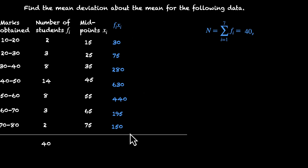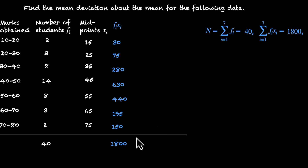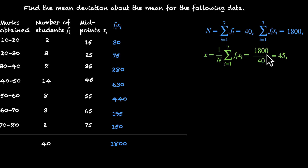Adding all the f_i x_i values: 30+75+280+630+440+195+150 = 1800. So Σf_i x_i = 1800. Our mean is Σf_i x_i divided by N, which is 1800 ÷ 40 = 45. So our mean is 45.